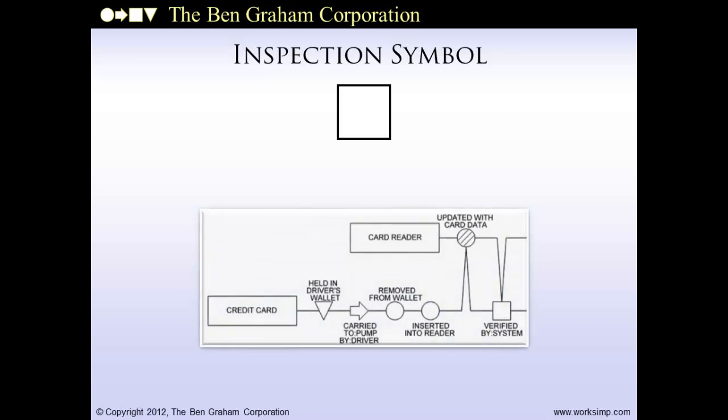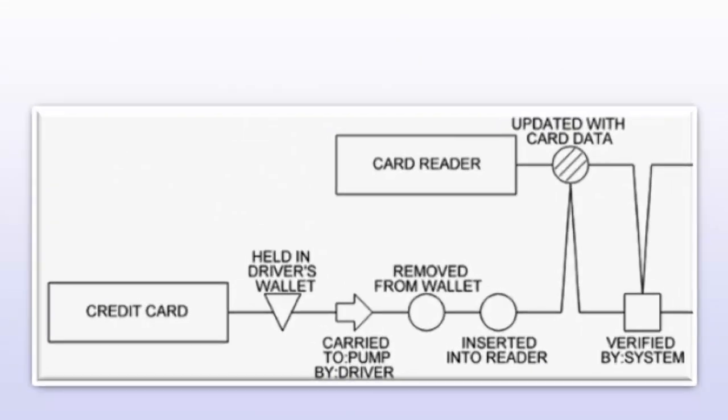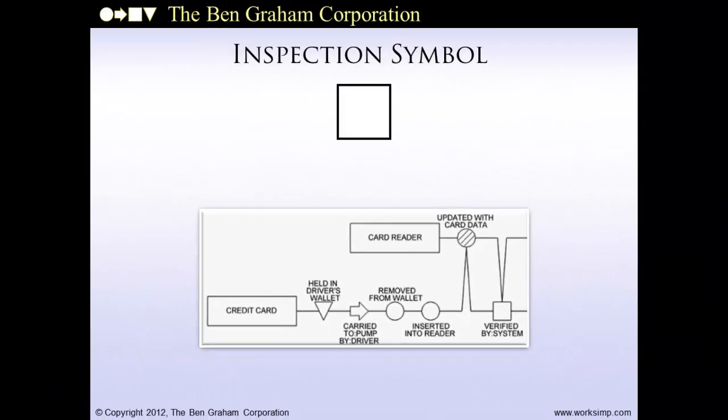Inspection steps are shown with a square. They represent checking work — checking the document to see if it's right and okay to continue. An inspection step is not used when checking is limited to normal conscientious work. It will typically be followed by a correction routine showing alternative processing when the item fails the inspection. In this snippet, you see one inspection step where the credit card is being checked by the card reader. The right angles of the square remind us that the symbol represents checking to see if the item is right.